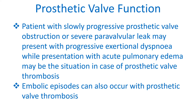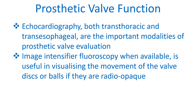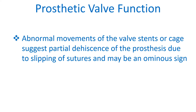Embolic episodes can also occur with prosthetic valve thrombosis. Echocardiography — both transthoracic and transesophageal — are the important modalities of prosthetic valve evaluation. Image intensifier fluoroscopy, when available, is useful in visualizing the movement of the valve disc or balls if they are radio-opaque. Abnormal movements of the valve stents or cage suggest partial descent of the prosthesis due to slipping of sutures and may be an ominous sign.